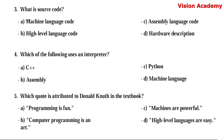Question number 3. What is source code? Option A: machine language code. Option B: high level language code. Option C: assembly language code. Option D: hardware description. Here, option B — high level language code — is called source code.